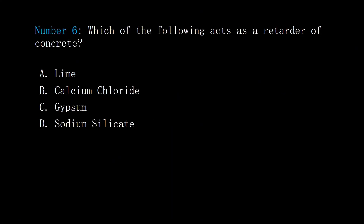Number 6. Which of the following acts as a retarder of concrete? A: lime. B: calcium chloride. C: gypsum. D: sodium silicate. Answer: C, gypsum.